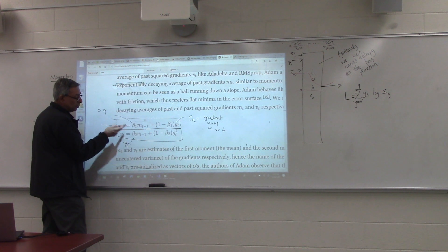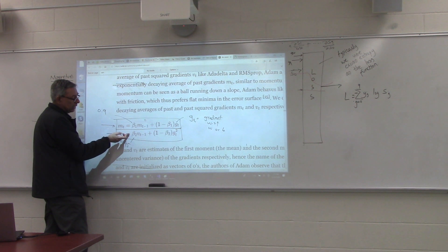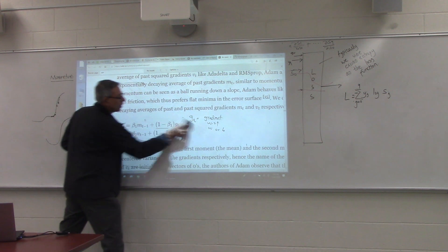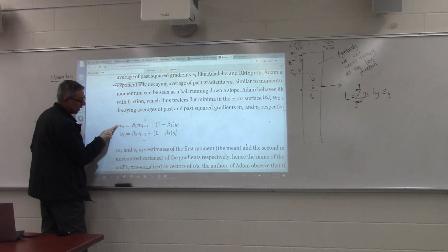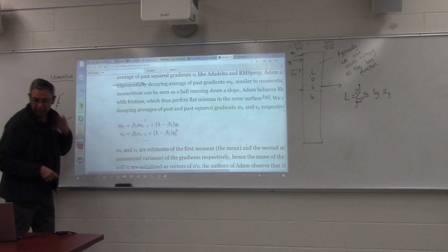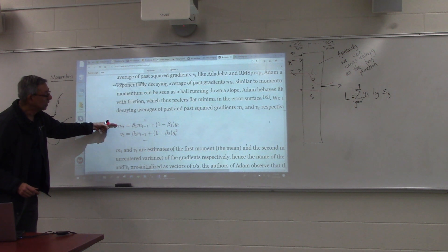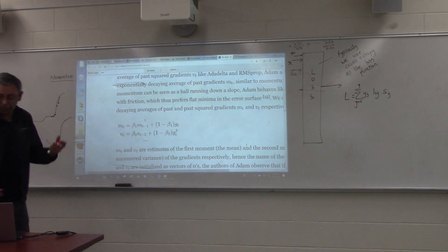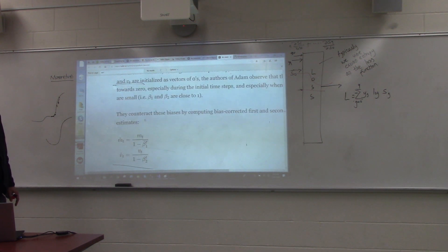So this is sort of like the first moment, the weighted mean. This is sort of like the variance, right? So once we have defined mt and vt, this is proportional to the weighted history of the gradient. This is proportional to the weighted history of the square of the gradients.